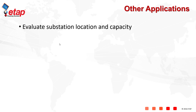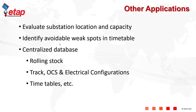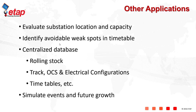Other applications of eTrax include the ability to identify substation location and capacity, such as transformer sizing. With eTrax, you can identify avoidable weak spots in the timetable by utilizing multiple what-if cases. You can centralize your railway system database, such as rolling stock, track, overhead catenary information, as well as train timetables. You can also use eTrax to simulate various sequence of events, such as emergency conditions and breaker operation.